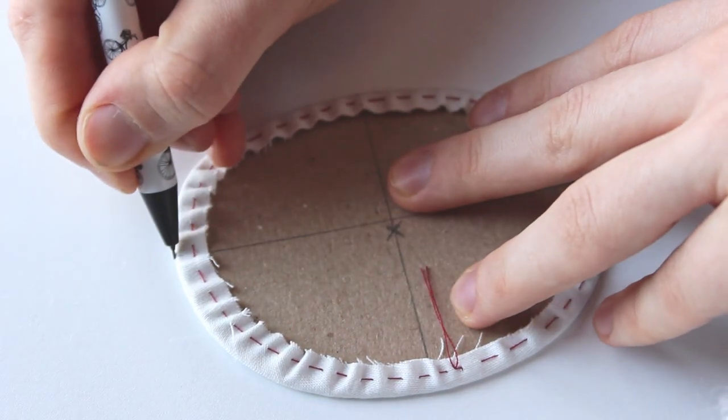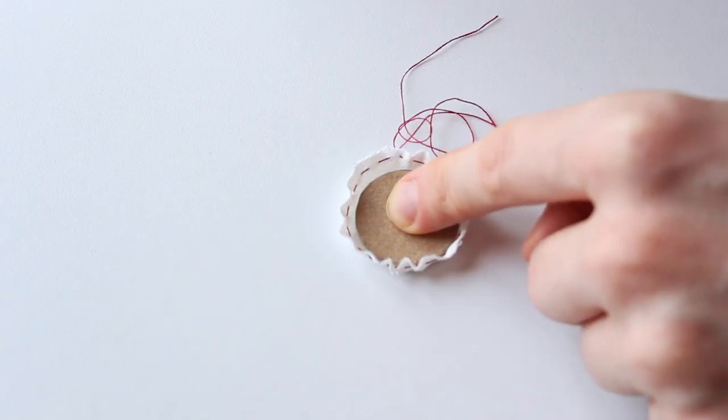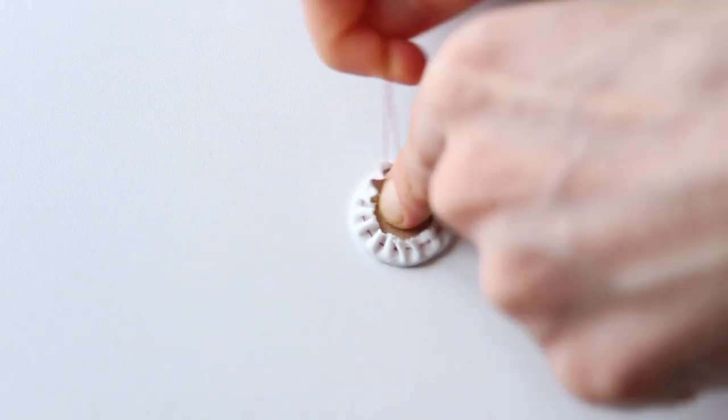Copy the lines you made on the cardboard to the fabric. Just make four small marks on the sides. Repeat the same process with the neck piece.